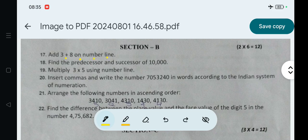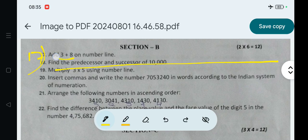Section B, Question number 17 is: Add 3 plus 8 on number line. This section has 6 questions, 2 marks each. First of all, number line. 3 plus 8 easily adds to 11. So it's a positive integer, so we'll go from 0 to the right hand side up to 11, or up to 12. Let me draw: 1, 2, 3...